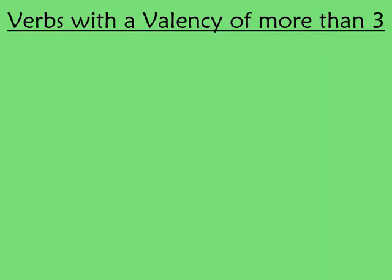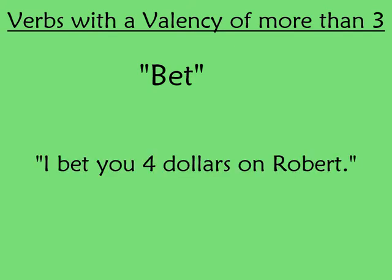Can a verb have a valency of even more than three? It's hard to say. It can be argued that the verb 'bet' has a valency of four. The prime example sentence is 'I bet you four dollars on Robert,' where I, you, four dollars, and Robert are all considered by some to be participants. I personally think it counts, but some linguists don't think all of those objects are valid participants in the valency of this verb — you can make your own judgment.